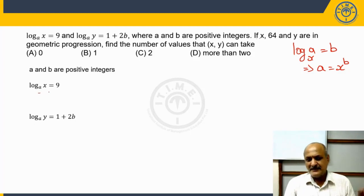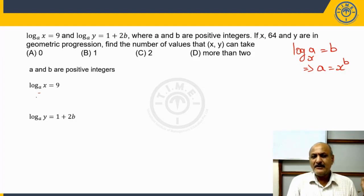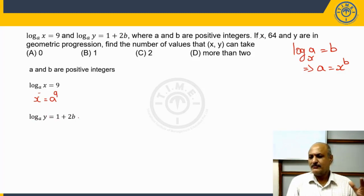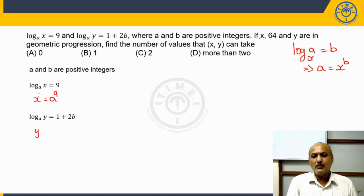Now let's interpret what is given. If it is given log x to the base a is equal to 9, we can tell that x is equal to a raised to the power of 9. In the same manner, log y to the base a is equal to 1 plus 2b, so in exponential form, y is equal to a raised to the power of (1 plus 2b).